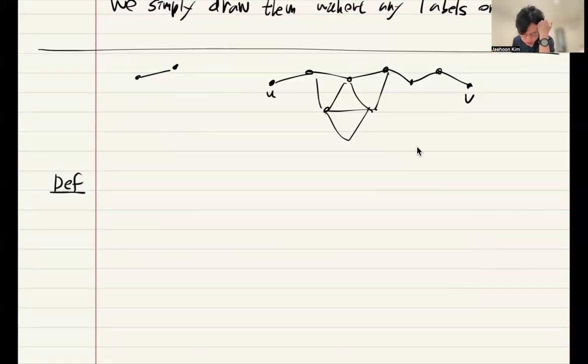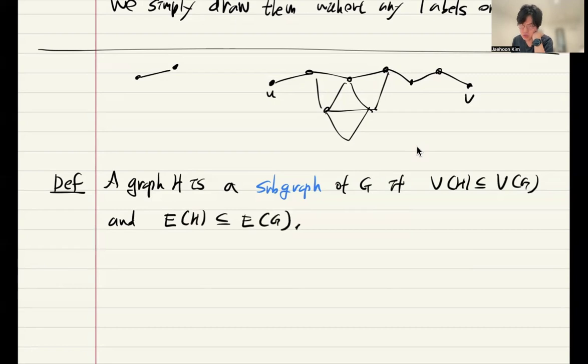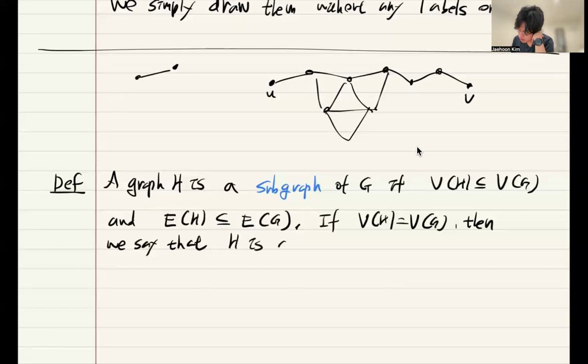So, we want to talk about this sort of existence of certain subgraph inside of a graph. That motivates the following definition of subgraph. We say that a graph H is a subgraph of G if vertex of H is subset of vertex of G, and if the vertex sets are the same, then we say that H is a spanning subgraph.